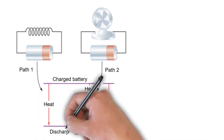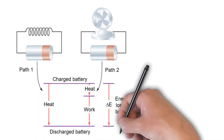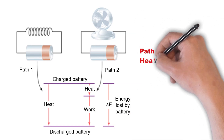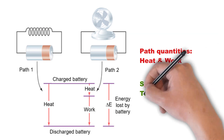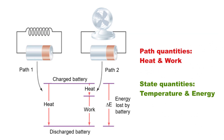In path one, the positive and negative poles of a battery are connected by a wire. In this case, the battery loses energy to the surroundings only as heat and no work is performed. In path two, the battery discharges through a motor and loses energy as work — making the fan turn — and also loses energy as heat, though the amount of heat lost is much less than in path one. Although the energy lost in both paths is the same, the amounts of heat and work are different. Therefore, heat and work are path-dependent quantities. Being the same in both paths, energy is a state quantity. Note that temperature is a state quantity while heat is a path quantity.